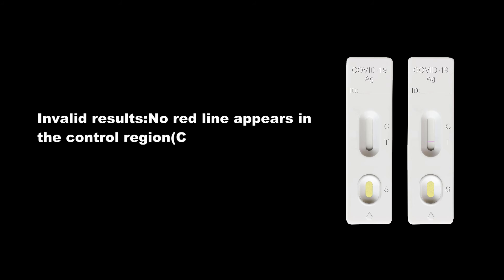Invalid results: No red line appears in the control region C. The test is invalid even if there is a line on test region T.